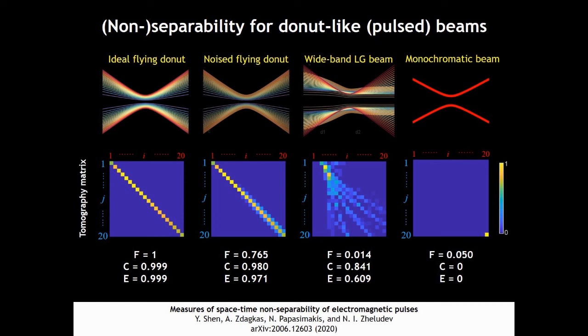And further decrease for the LG beam. And as an extreme case of monochromatic beam, the concurrence and EOF is exactly 0.